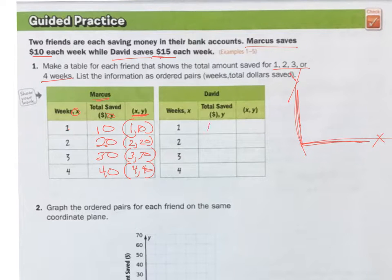Now, David, $15 a week. So for two weeks, it's going to be not $20 at all. It's going to be $30. And then it's going to be $45. And then it's going to be $60. And so we have 1,15, 2,30, 3,45, and 4,60. Those are your XY.